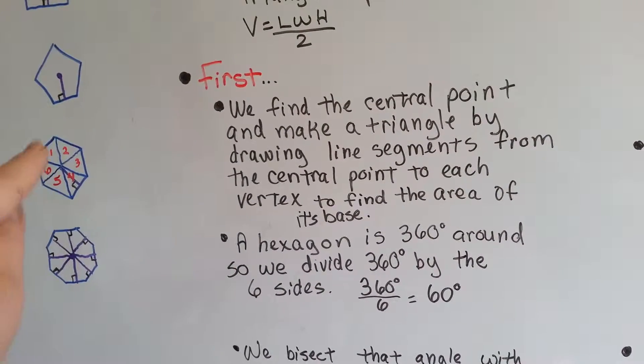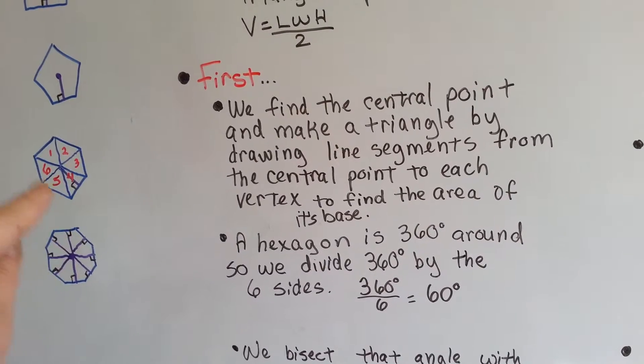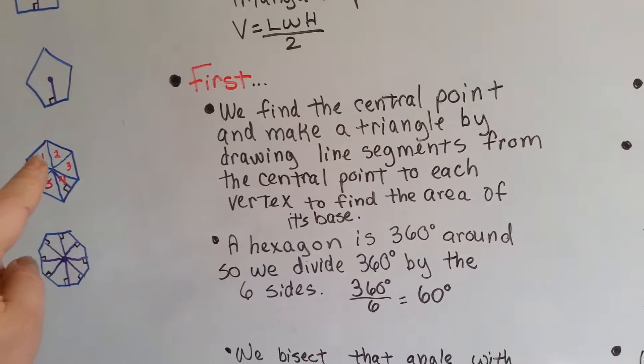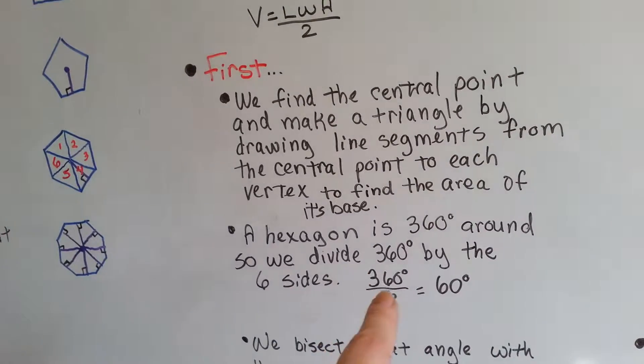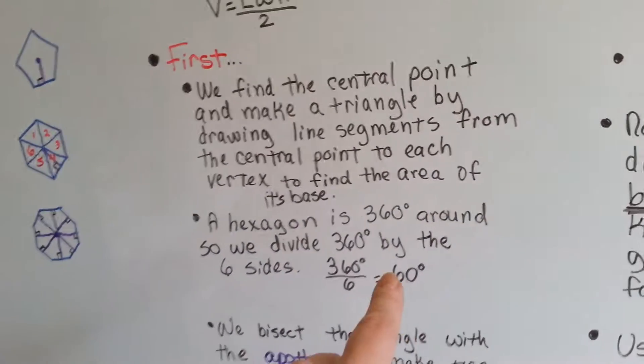We're going to find the area of the base. Because this is 360 degrees around, we're going to divide it by six, by the six sides to make the triangles. 360 divided by six is 60 degrees. Now look at this drawing.